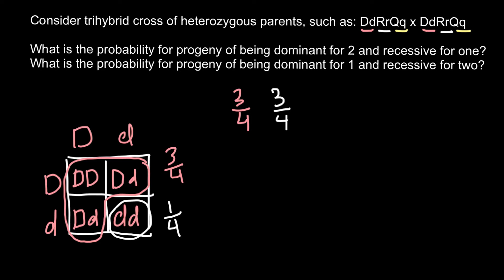For one specific ordered combination — say D dominant, R dominant, Q recessive — we multiply the probabilities: three quarters times three quarters times one quarter. Because these are all independent probabilities, we multiply them together to get 9 over 64. So 9 out of 64 combinations would have two dominant traits and one recessive for that specific order.